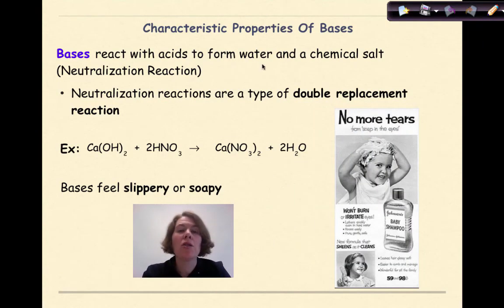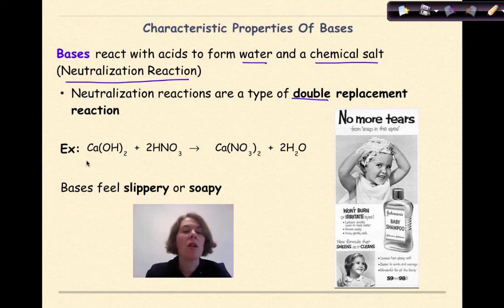Bases react with acids to form water and a chemical salt. Again, these are called neutralization reactions, and we've talked before that these are a type of double replacement reactions. So here's a situation where we have calcium hydroxide, which is our base, reacting with nitric acid, our acid right here, to form a chemical salt of calcium nitrate, and again, water as a product.